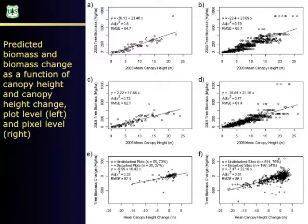The next pair of plots are the 2009 comparisons — similar slopes between the plot sample and the systematic pixel sample. The bottom two graphs are the change differences. I plotted undisturbed plots as zeros and disturbed plots as pluses, and the same for the landscape sample: if a pixel lost more than 66 megagrams per hectare we called it disturbed. Similar slopes — very comparable results between 2003 and 2009.